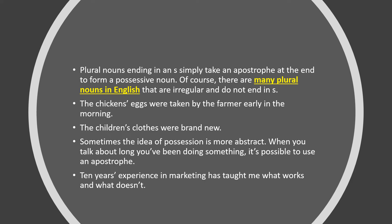Sometimes the idea of possession is more abstract. When you talk about how long you have been doing something, it is possible to use an apostrophe. For example: 'Ten years' experience in marketing has taught me what works and what doesn't.' Usually we say 'of' and use that form, but we can also use this shortened form with an apostrophe.